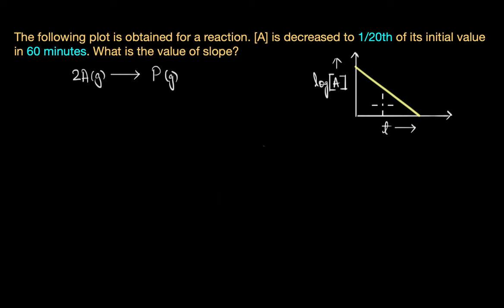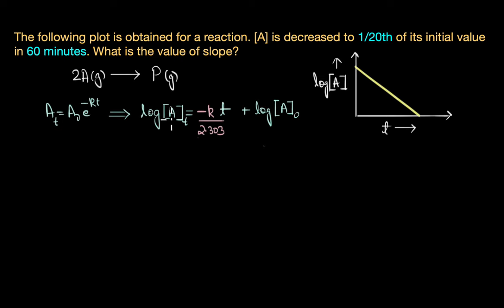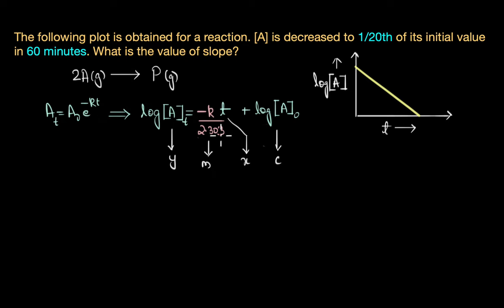This is characteristic of the integrated rate equation for a first order reaction, which is: log(A_t) = −(k / 2.303) · t + log(A₀). Treating this as the equation of a straight line y = mx + c, y is log(A_t), m is the slope equal to −k/2.303, and log(A₀) is the y-intercept. So we need to calculate the value of the slope, which is −k/2.303.